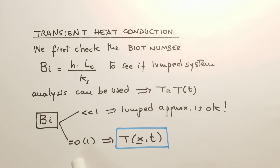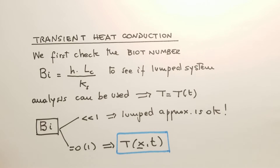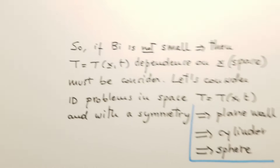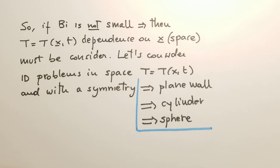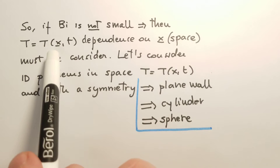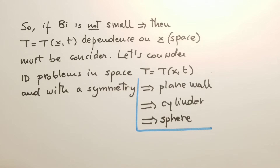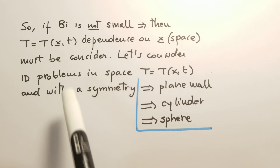Whereas if the Biot number is of order one — a finite number — then the temperature must be considered as a function of both space and time. Today we are talking about the case when the Biot number is not small, so the temperature depends on space and time, and both must be considered.